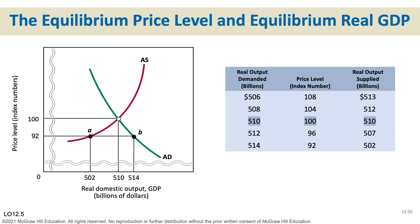Looking at a disequilibrium example at a price level of 92: how much is being supplied? 502 billion. How much is being demanded? 514 billion. At any price level below the equilibrium price, we get a shortage — aggregate demand exceeds aggregate supply. Here, 514 minus 502 gives us a 12-billion-dollar shortage. We can interpret these exactly the same way we did in Chapter 3.